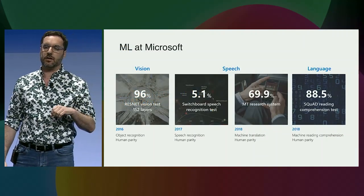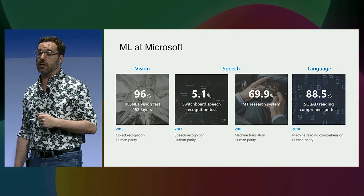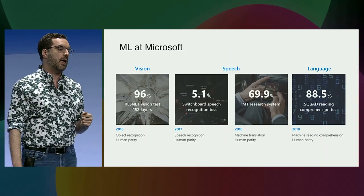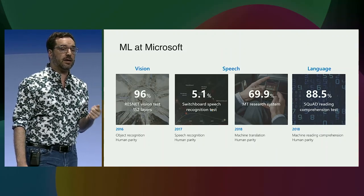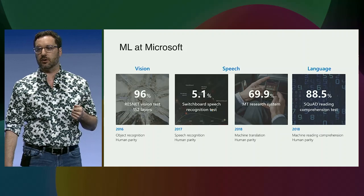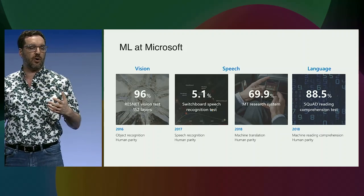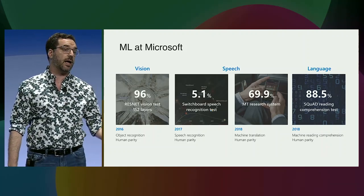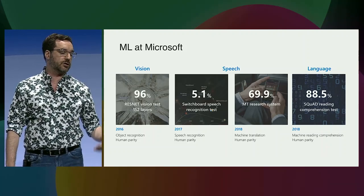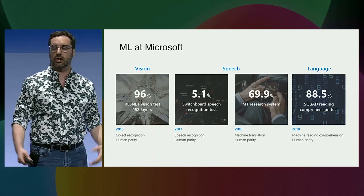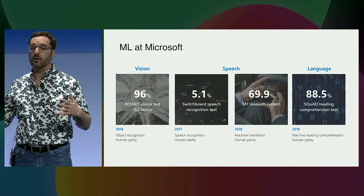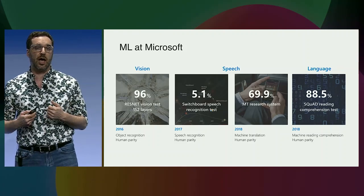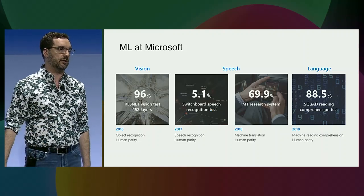At Microsoft, we've been doing machine learning for a long time. We have one of the largest research arms in the world, and we made tremendous progress around machine learning, not just for ourselves, but really to help the research community. You can see just a few of the real milestones that we were able to launch over the past few years in vision, speech, and language. Some of these were world records at the time, and of course we gave it all back because it's so important that we help the entire industry move forward for machine learning.